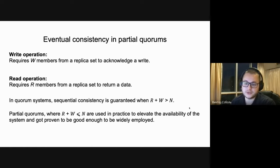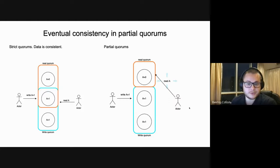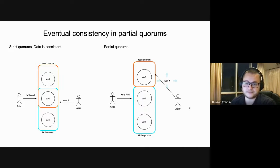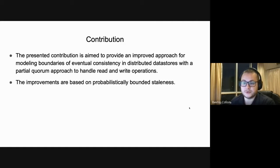This picture illustrates how it works. On the left side, when the write actor writes a value, they get a response only after it's written to two instances; when the read actor reads, they get a response only after the value is returned from two instances. Because those quorums intersect, the read actor will be given an up-to-date value. On the right side, with a non-strict quorum, even when the write operation is complete, the read operation may still return stale data if the read quorum consists of nodes not intersecting with write quorum.